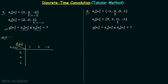Now focus on the method. We obtain our first row by multiplying the first element of x2n by all elements of x1n: 2×1=2, 2×2=4, 2×(minus 2)=minus 4. For the second row, multiply the second element of x2n (which is 0) by all elements of x1n, giving all zeros. For the third row, multiply 1 by all elements of x1n, giving 1, 2, minus 2.